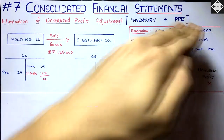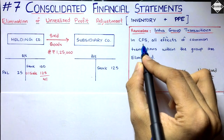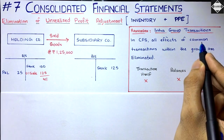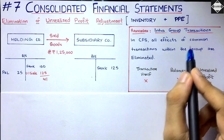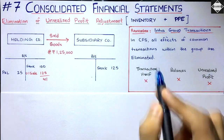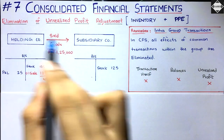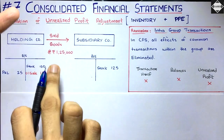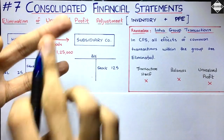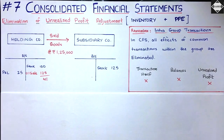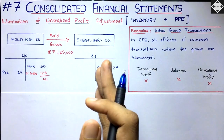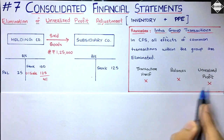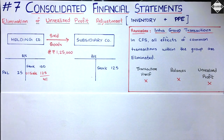In the consolidated financial statement, all effects of intra-group transactions are eliminated. In the consolidated statement of profit and loss, you eliminate both the purchase of one lakh twenty-five and the sale of one lakh twenty-five. Any debtor or creditor balances — bills receivable, bills payable — are also eliminated, and the unrealized profit is eliminated as well.